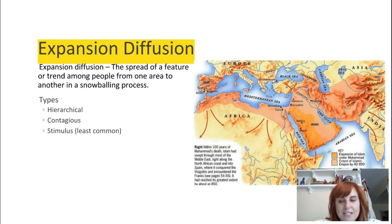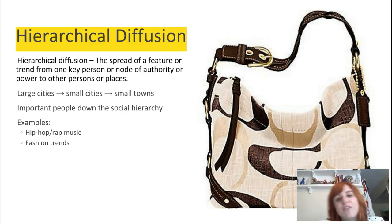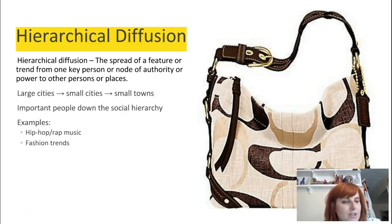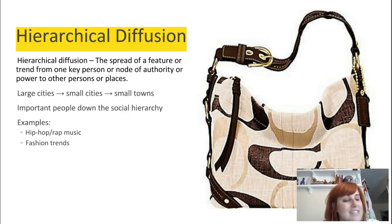Then we have three types of expansion diffusion, which is different because it's not really because of relocation — things just kind of spread over land masses and different venues. The first is hierarchical diffusion, which happens in two ways. One way is something starting in a big city and moving to smaller cities and eventually out to rural areas and small towns. Fashion trends often do this — like in New York City a blue shirt becomes trendy, then suburbs start wearing them, then it moves out to rural areas. That's hierarchical diffusion.